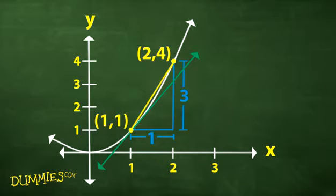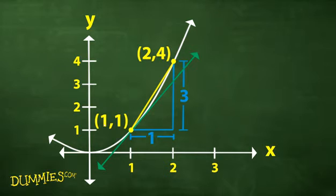The limit process lets you slide the point that starts at 2,4 down toward 1,1 — until it's a thousandth of an inch away, then a millionth, then a billionth, and so on. If you do the math, the slopes between 1,1 and your moving point would look something like 2.001, 2.00001, and so on. With the mathematics of limits, you know the slope at 1,1 is precisely 2.